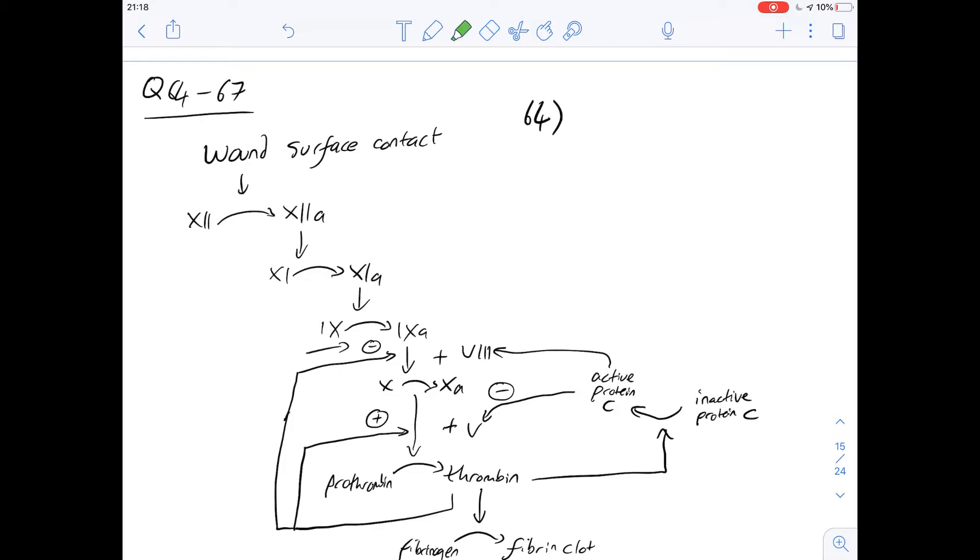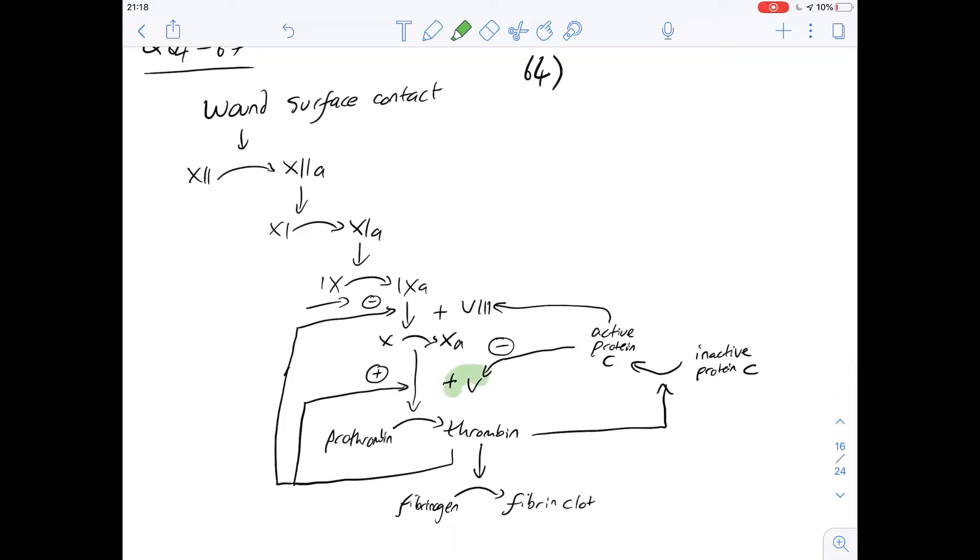Question 64 says which one of the following is a precursor for factor 5. So let me highlight factor 5 here so we can see where it is. Option A says active protein C could be a precursor. Well, active protein C is inhibiting it and we can tell this by the little negative sign in the circle above the arrow leading to it, so it's not a precursor of it.